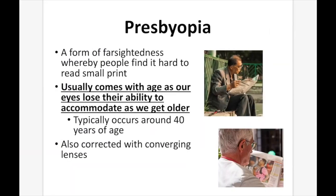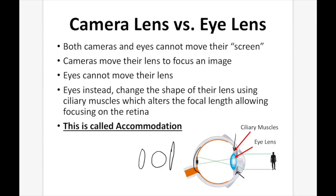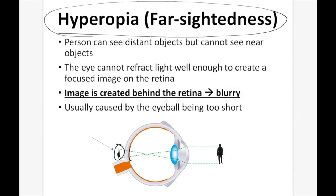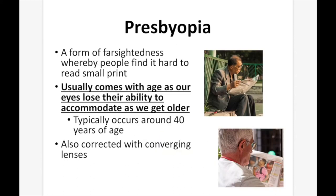Presbyopia is a form of farsightedness where people find it hard to read small print, and it usually comes with age as the eyes lose the ability to accommodate. As we get older, our eyes lose the ability to change the shape of the lens — especially to thicken it. Those muscles weaken, and a thicker lens is needed for more convergence. Since the light rays can't converge fast enough, the image is located after the retina, just like in hyperopia. This is corrected using a converging lens.